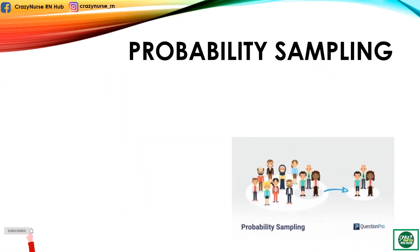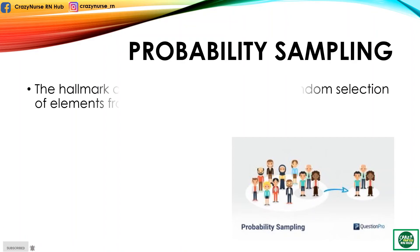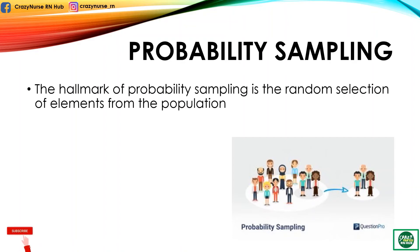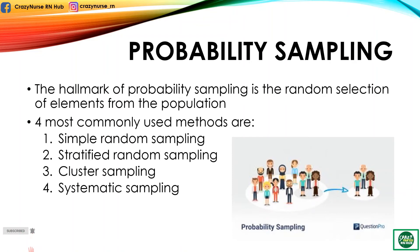Now let's proceed to probability sampling. It is the hallmark of probability sampling that the random selection of elements from the population should be demonstrated. The four most commonly used probability sampling methods are simple random sampling, stratified random sampling, cluster sampling, and systematic sampling.